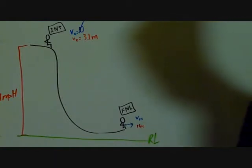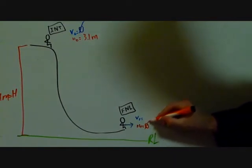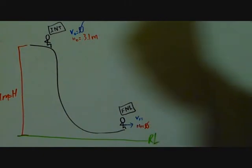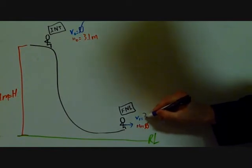At the final position, because we mark the reference line at 0, the height final will be 0 as well. And we're solving for the velocity at the final position.